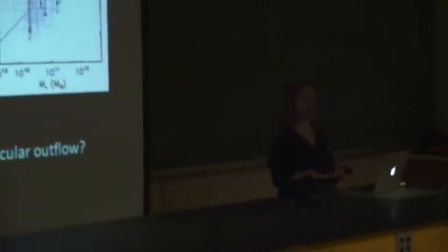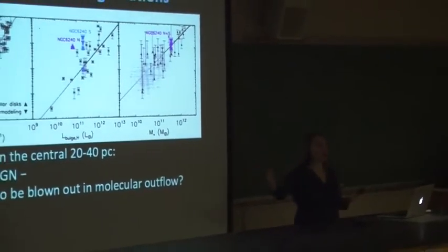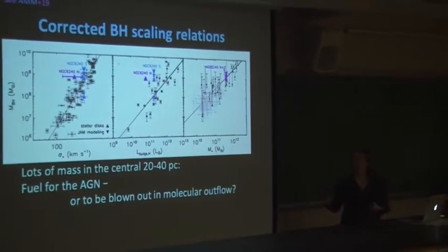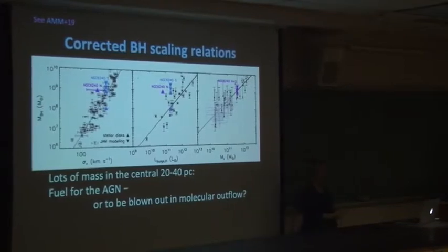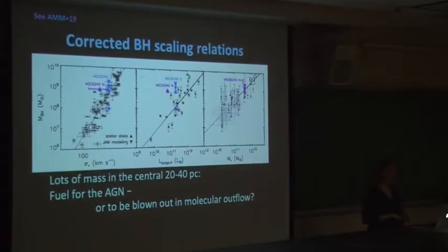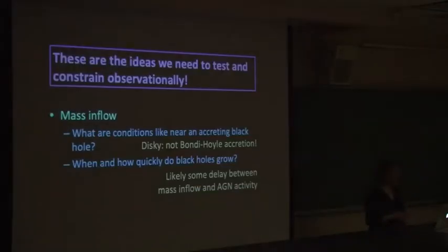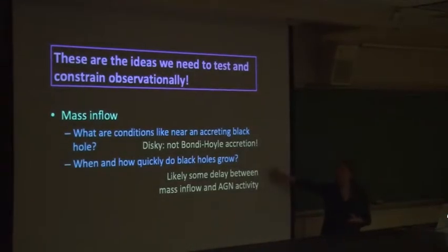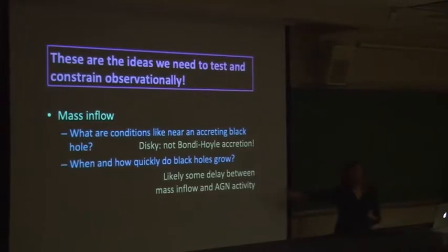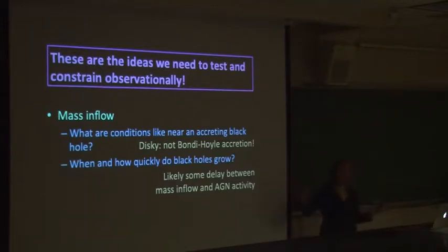What we've learned is that there could be lots of mass in the central 20 to 40 parsecs of at least some galaxies — maybe more like AGN or gas-rich systems. This could be necessary fuel to turn on the AGN, and some of it could be blown out in molecular outflows. We have more data coming from ALMA Cycle 6 and Cycle 7. Going back to our questions about mass inflow: conditions are disky, not appropriate for Bondi-Hoyle accretion. And there's plausibly some significant delay between mass inflow and AGN activity — especially if simulations are only resolving kiloparsec or 100-parsec scales, it's got to take some time to get down there.